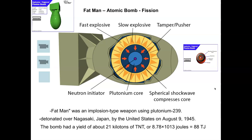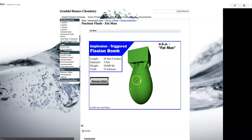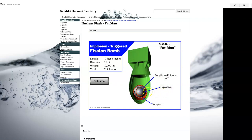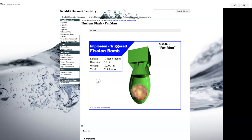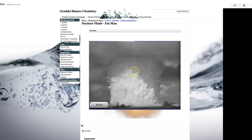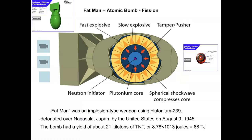The second bomb, 'Fat Man,' had a plutonium core — remember plutonium is one of the four fissionable isotopes. It used a different design: an implosion device with a beryllium-polonium core surrounded by explosives that implode the plutonium inward to achieve critical mass. They used plutonium because they had run out of uranium, but knew plutonium worked the same way. The implosion design is still used in modern weapons.